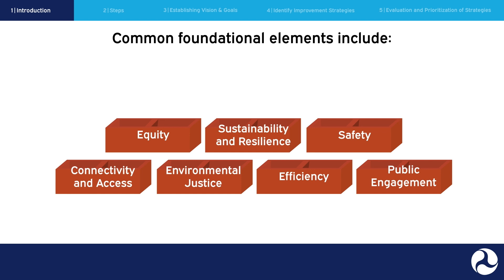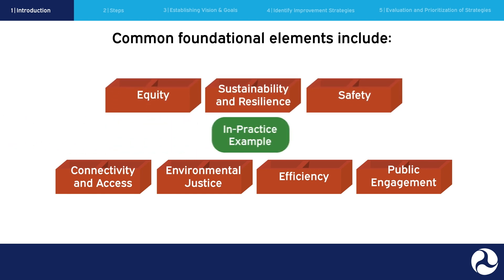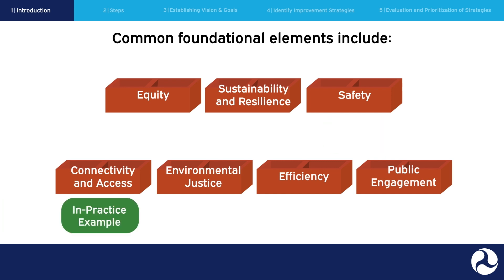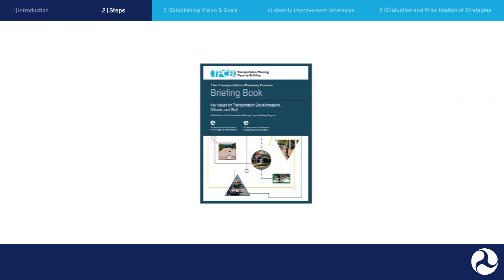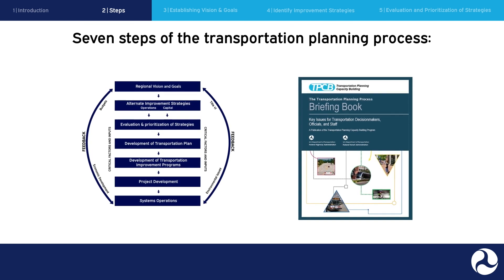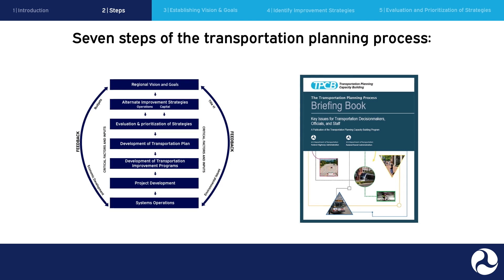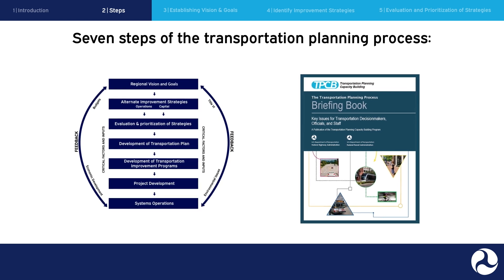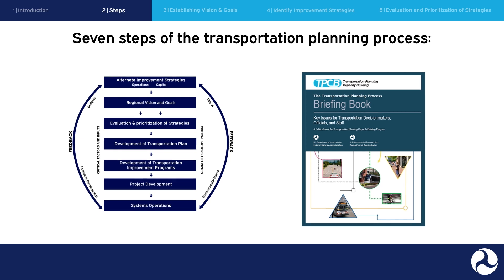Additionally, using an in-practice example, we will follow the course of a hypothetical project as it moves through each step of the transportation planning process. From the briefing book and the graphic shown earlier, we are using these seven steps to illustrate the transportation planning process. Keep in mind that to accommodate the complex realities of the real world, the process is often less straightforward than is presented here.